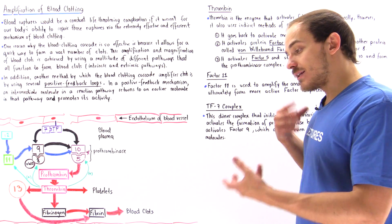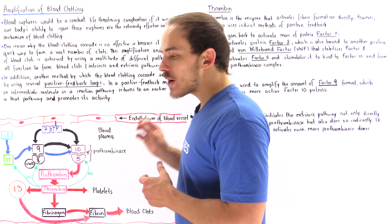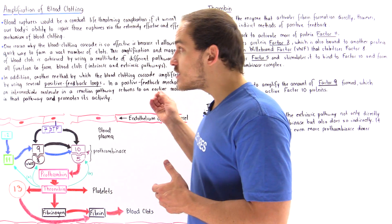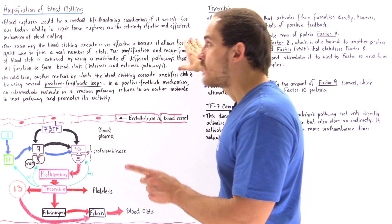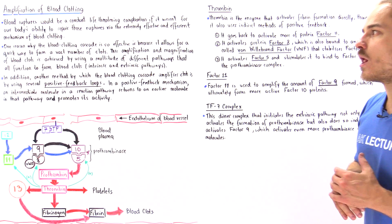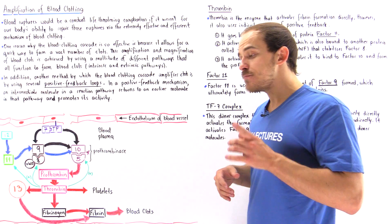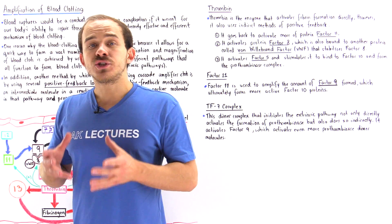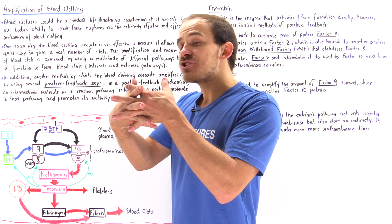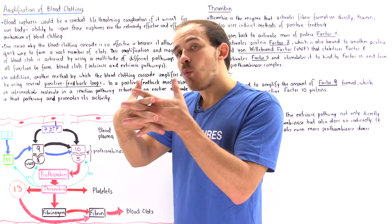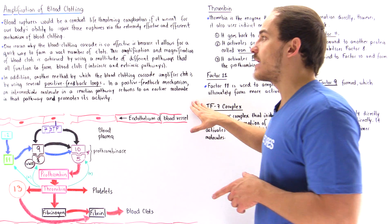As a result of this reasoning, we might assume that blood ruptures would be a constant, life-threatening situation if it wasn't for our body's ability to actually repair and seal off the ruptures in a very effective and efficient way by using the blood clotting cascade. One reason why the blood clotting cascade is so effective and efficient is because it allows a very quick way to produce a great number of blood clots that can aggregate and collect and form a mesh-like structure that keeps a watertight seal across that blood vessel and prevents the movement of blood across that rupture.